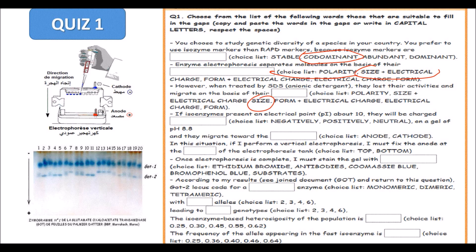If isozymes present an isoelectric point PI about 10, they will be charged positively on a gel of pH 8.8. In this situation, you will have molecules charged positively, because they are in a medium on a gel with pH 8.8, and they are very basic proteins. They migrate in this situation toward the cathode. I have to write here cathode.